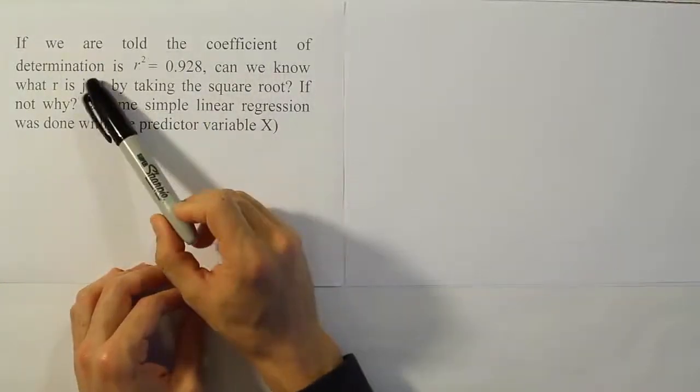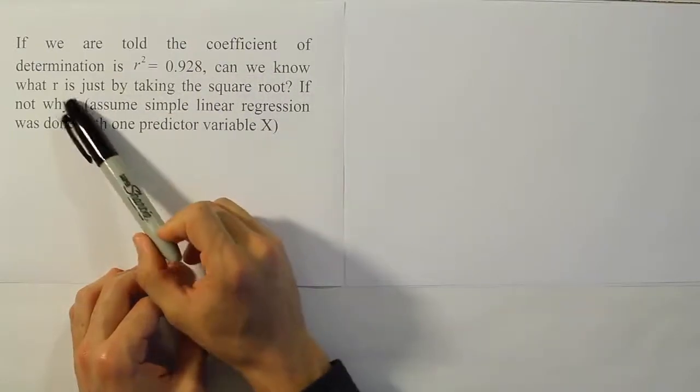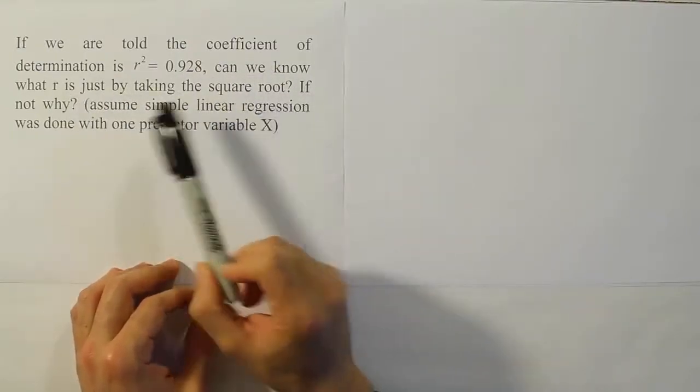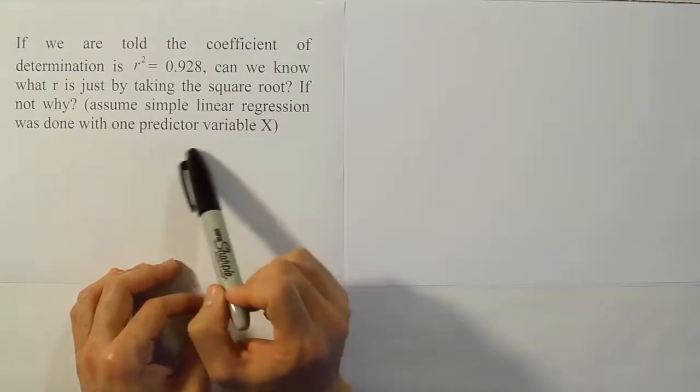If we were told the coefficient of determination is r squared equals 0.928, can we know what r is just by taking the square root? If not, why? Assume simple linear regression was done with one predictor variable x.